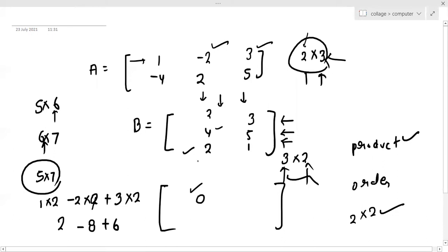Now, if you have this element, you will multiply the first row by the second column. You will multiply 1 by 3, minus 2 by 5, and then 3 by 1. So this is 3 minus 10 plus 3, which is minus 4.